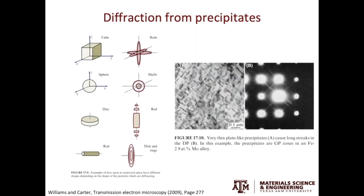In the case of precipitates, the diffraction pattern not only carries information about the crystal structure of those precipitates, it also bears information about the precipitate shapes. Taking a cubic precipitate as an example, the relrod shapes are shown on the right. The same concept can be extended to precipitates with spherical, disc, and rod shapes.